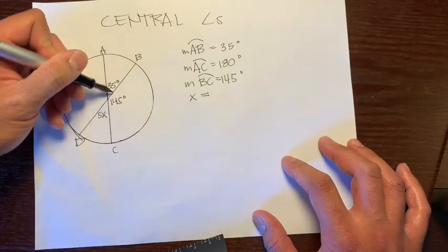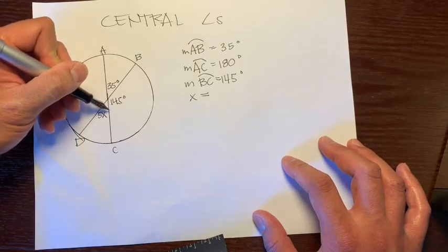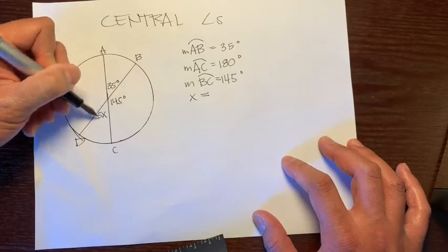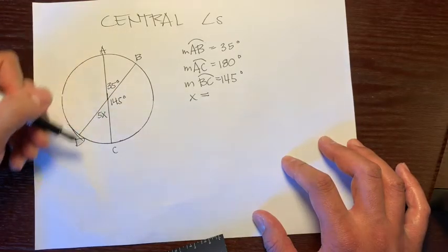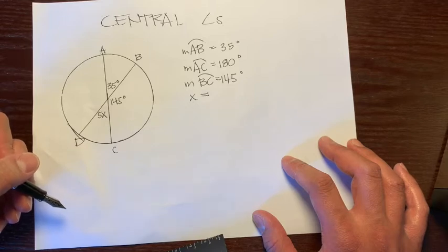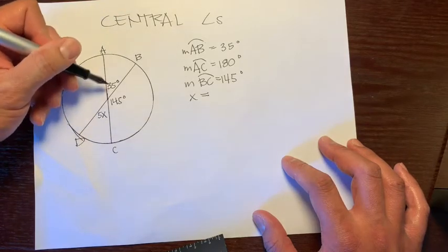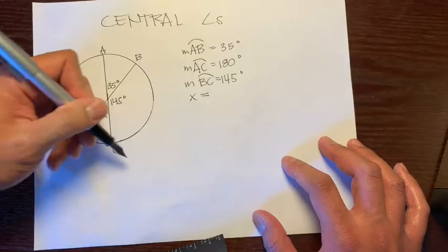Or if you notice that this line, or this angle, and this angle are supplementary, because they're formed by this straight line right here, so you could add these two and set them equal to 180. But I'll use the vertical angles.